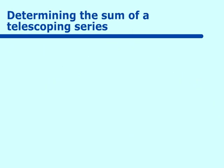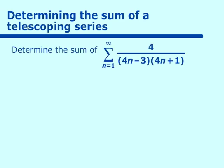Let's look at another example. Determine the sum from n equals 1 to infinity of 4 over (4n-3)(4n+1). Again, a telescoping series, and we recognize it because we can put it into those partial fractions.